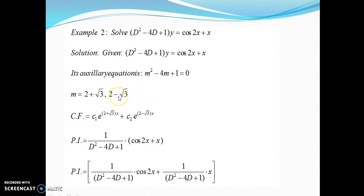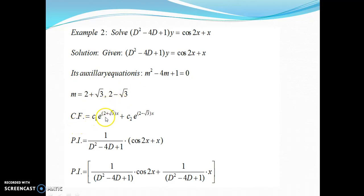One remark: students sometimes think these roots are complex, but iota must be present for a root to be complex; here there is no iota, so the roots are real and unequal. CF = C₁e^((2+√3)x) + C₂e^((2−√3)x). Now PI = 1/(D² − 4D + 1)·(cos 2x + x), which we separate as PI₁ + PI₂.